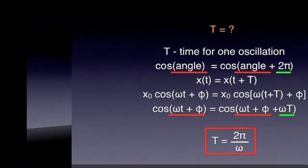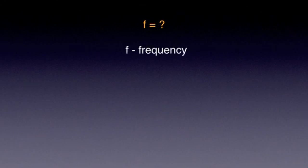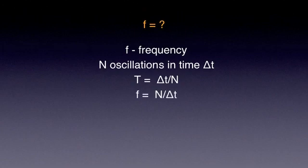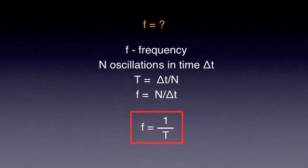Immediately from here we can define frequency f. As the period T is the time it takes for one oscillation, frequency f is the number of oscillations per unit time. If an oscillator completes n oscillations in a time interval delta·t, the period is delta·t divided by n, and the frequency is n divided by delta·t. Thus f equals 1 over T — frequency is the reciprocal of period.